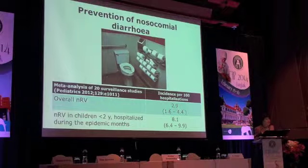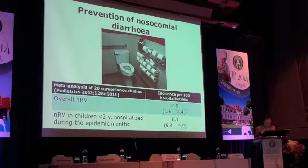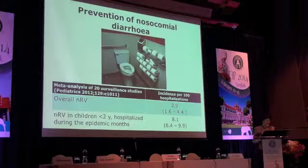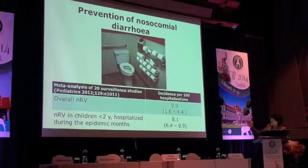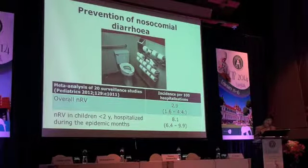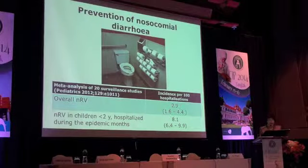Now I would like to discuss prevention of nosocomial diarrhea. If you work in a pediatric department, you know nosocomial diarrhea is always a problem. From a meta-analysis published in Pediatrics two years ago, the incidence was almost 3 episodes of mainly rotavirus nosocomial gastroenteritis per 100 hospitalizations, especially in children younger than two years hospitalized during epidemic months.